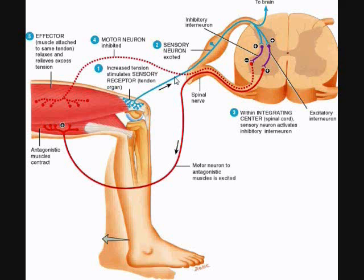There'll be a sensory receptor, a sensory neuron, an integrating center, a motor neuron, and an effector — all five typical components of a reflex arc. We follow the sensory impulse back to the mixed spinal nerve, in through the dorsal root ganglion, because all sensory impulses travel through the dorsal root of the spinal nerve, into the dorsal root, into the dorsal horn of gray matter, and then the main reflex arc will come on this branch here and synapse with an interneuron.